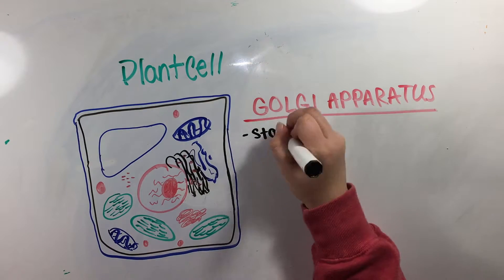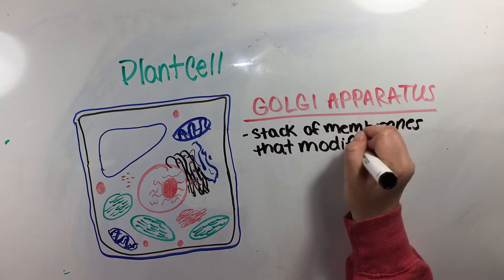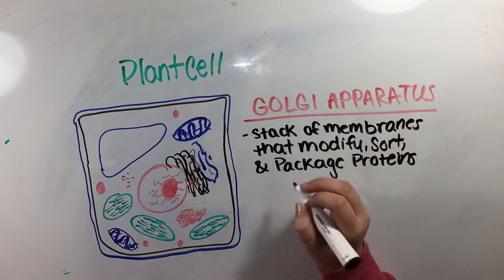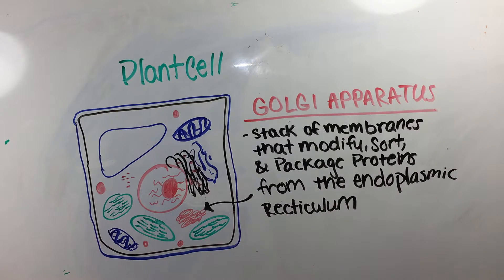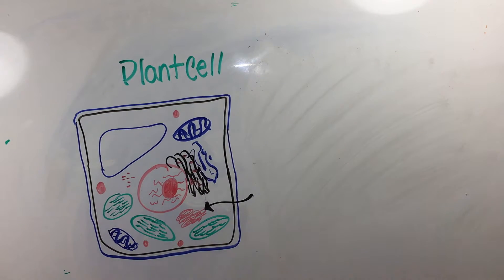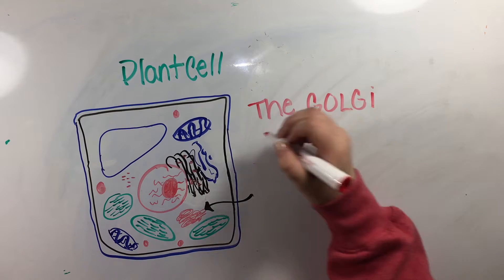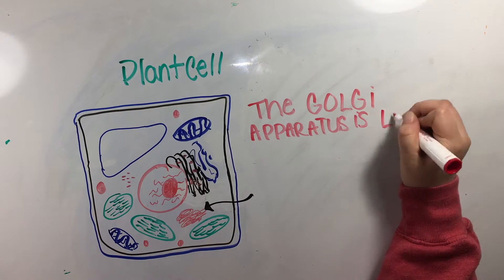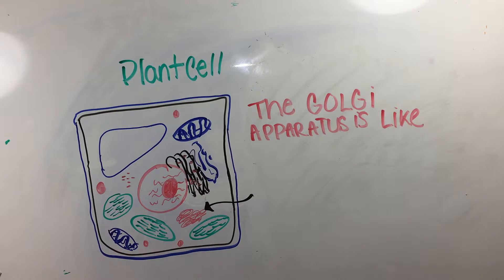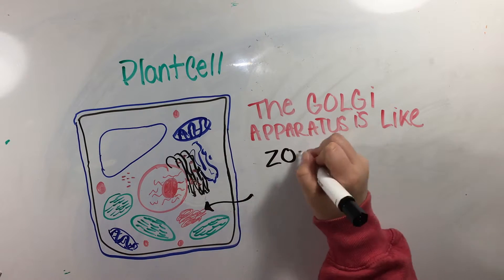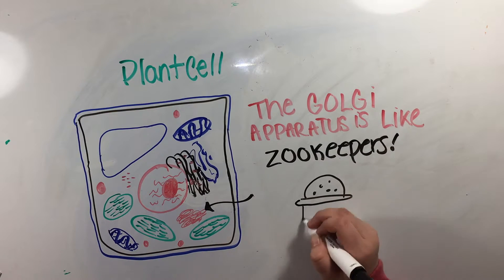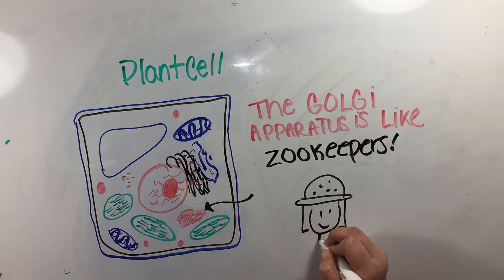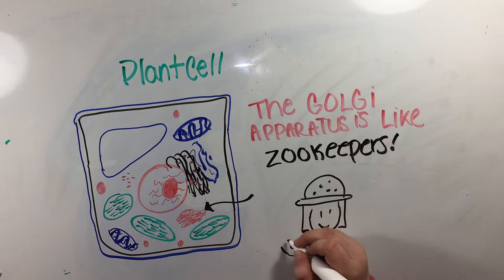The Golgi body is a stack of membranes that modifies, sorts, and packages proteins from the endoplasmic reticulum. Zookeepers can relate to the Golgi apparatus since they package waste and food for the zoo's animals and make sure everything is delivered correctly. The zookeeper is in control of things being transferred and moved, just like the Golgi apparatus does.